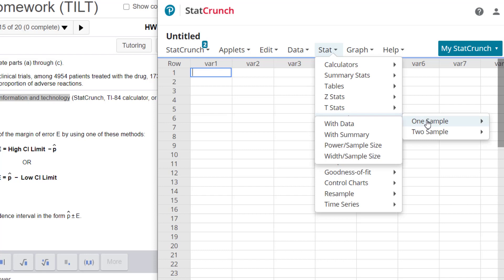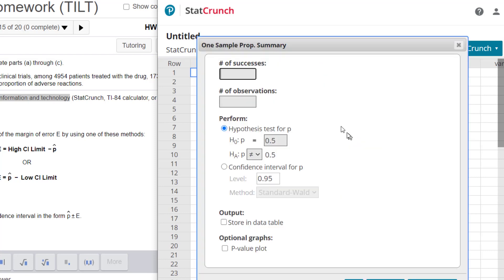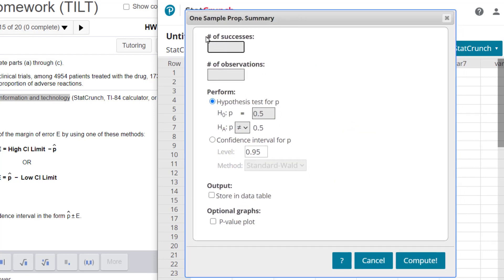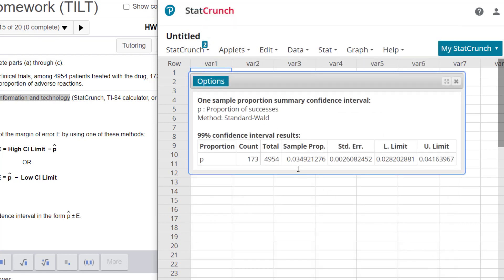We're going to do one sample proportion stats with summary data here. So when we pull this up we'll have our number of successes, number of observations and then we want to pick confidence interval. Now we had 173 adverse reactions out of 4,954 patients and then we want to make a confidence interval of 99% so 0.99 and then we compute.